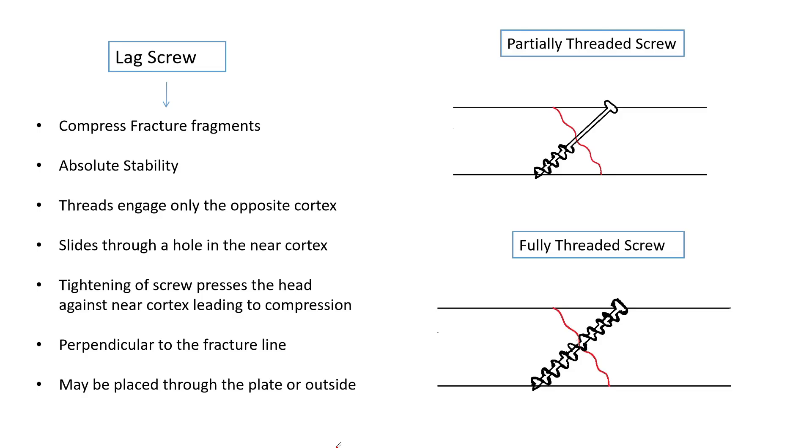In a lag screw, the threads engage only the opposite cortex or the far cortex and it slides through a hole in the near cortex. The tightening of the screw presses the screw head against the near cortex which leads to fracture compression.